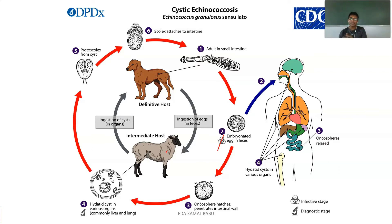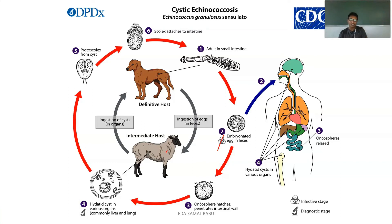These eggs are ejected out through feces. Whenever a healthy sheep is feeding in the grasslands and comes into contact with this feces — by means of grass or direct touch — it results in the ingestion of larval stages into the sheep again.